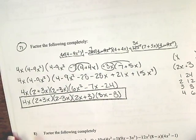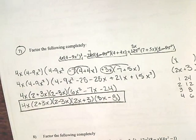And so our final answer is 4x times (2x plus 3) times (2x minus 3) times (2x plus 3) times (3x minus 8).